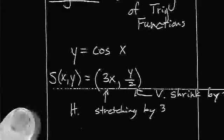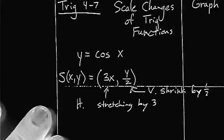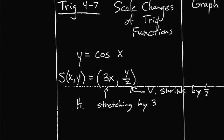Remember the words stretch and shrink. Stretch means something over 3 — horizontally stretching by 3. Vertical shrinking means the multiplier is going to be between 0 and 1.